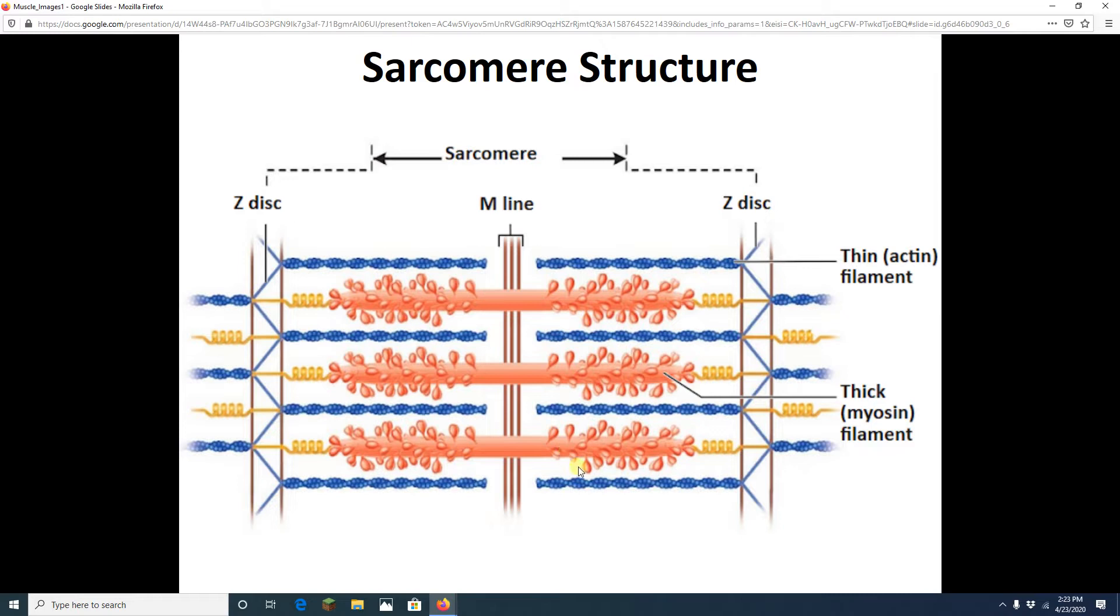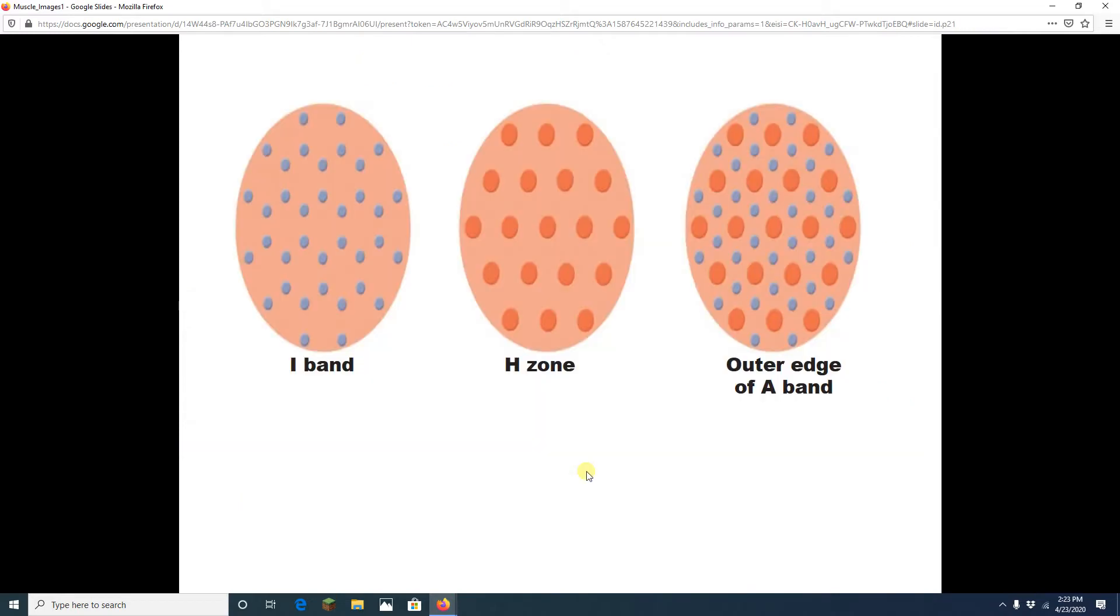If you do, let's look at a couple slices. If we slice a myofibril within the I-band, we are going to see nothing but thin actin filaments.